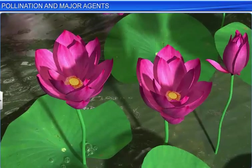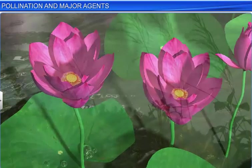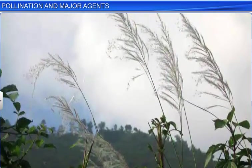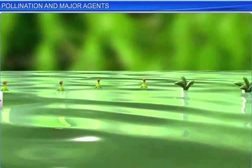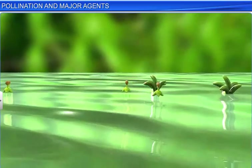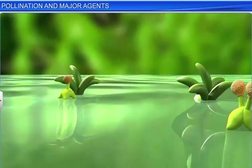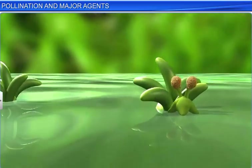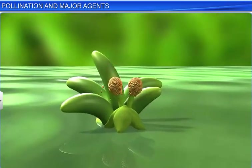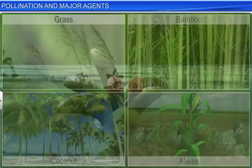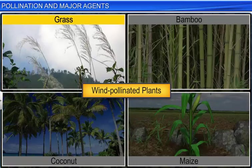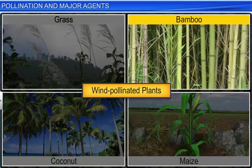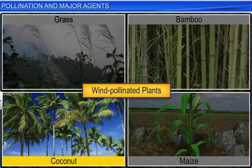Surprisingly, in aquatic plants, wind pollination, also called anemophily, is more widespread than water pollination. Wind pollination also occurs in terrestrial plants such as grass, bamboo, coconut, and maize.